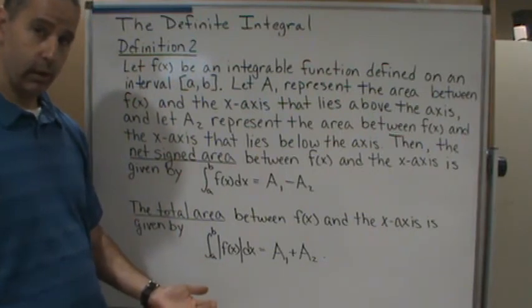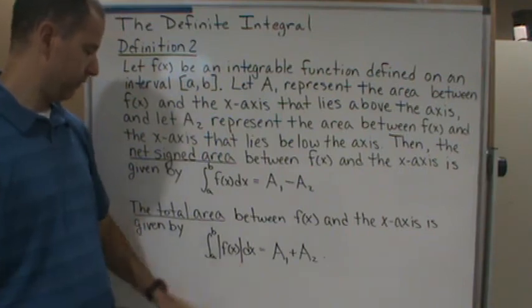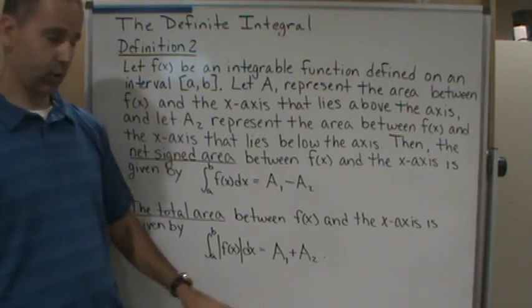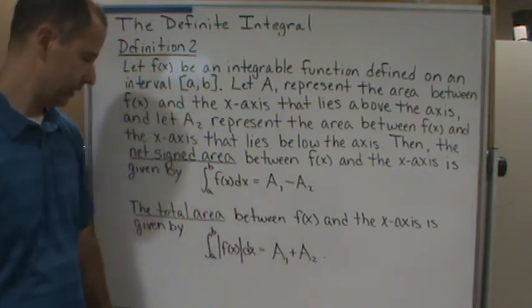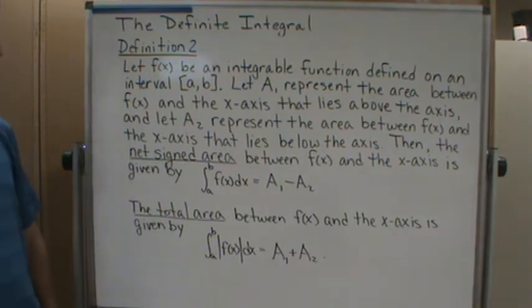And so we're going to take the absolute value of the function from a to b on that closed interval. That means we're going to add all of the areas, so it becomes a1 plus a2. And that's it, have a great day.